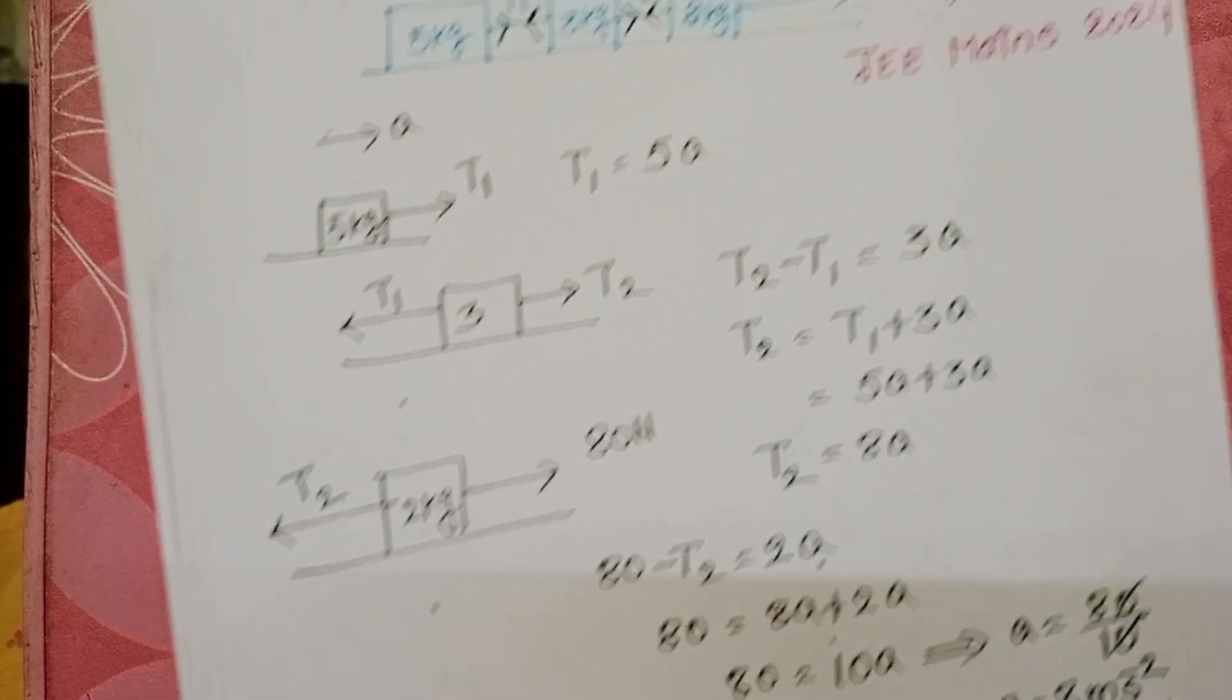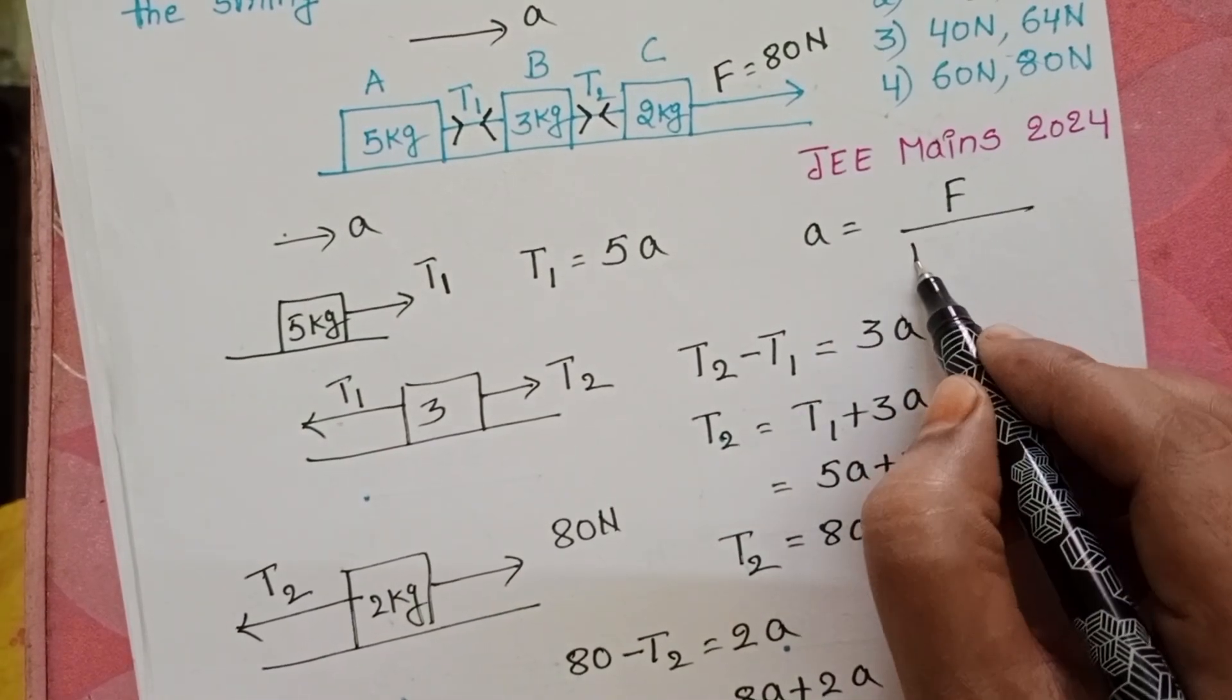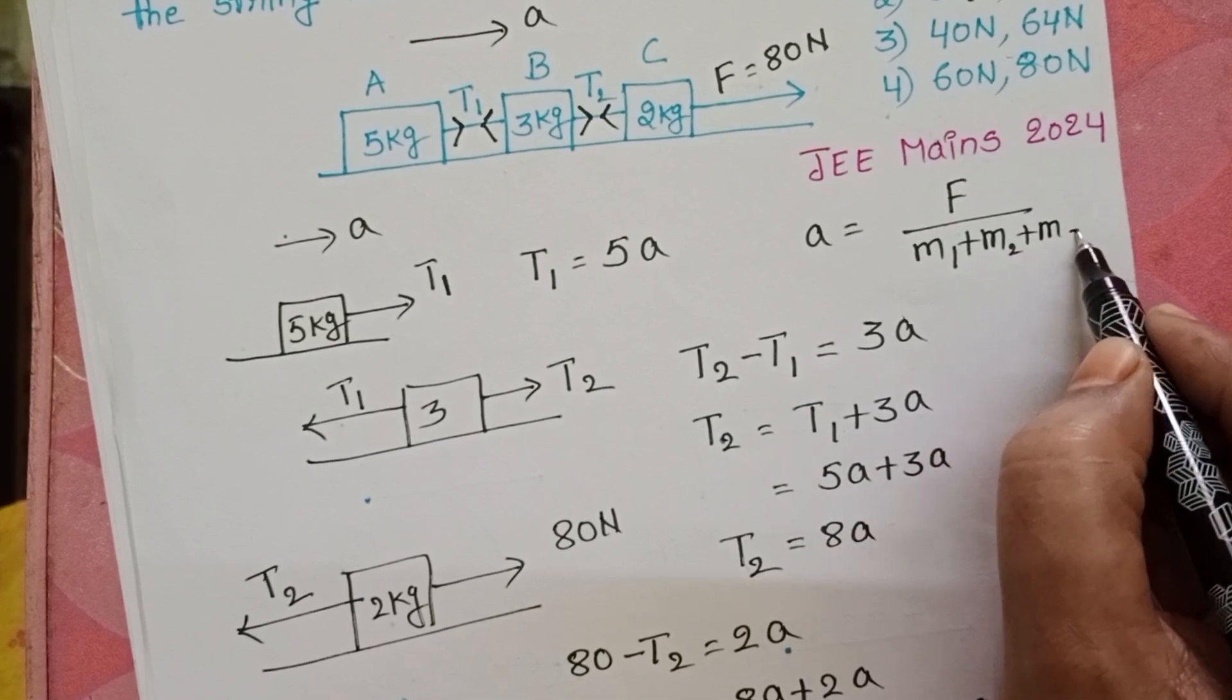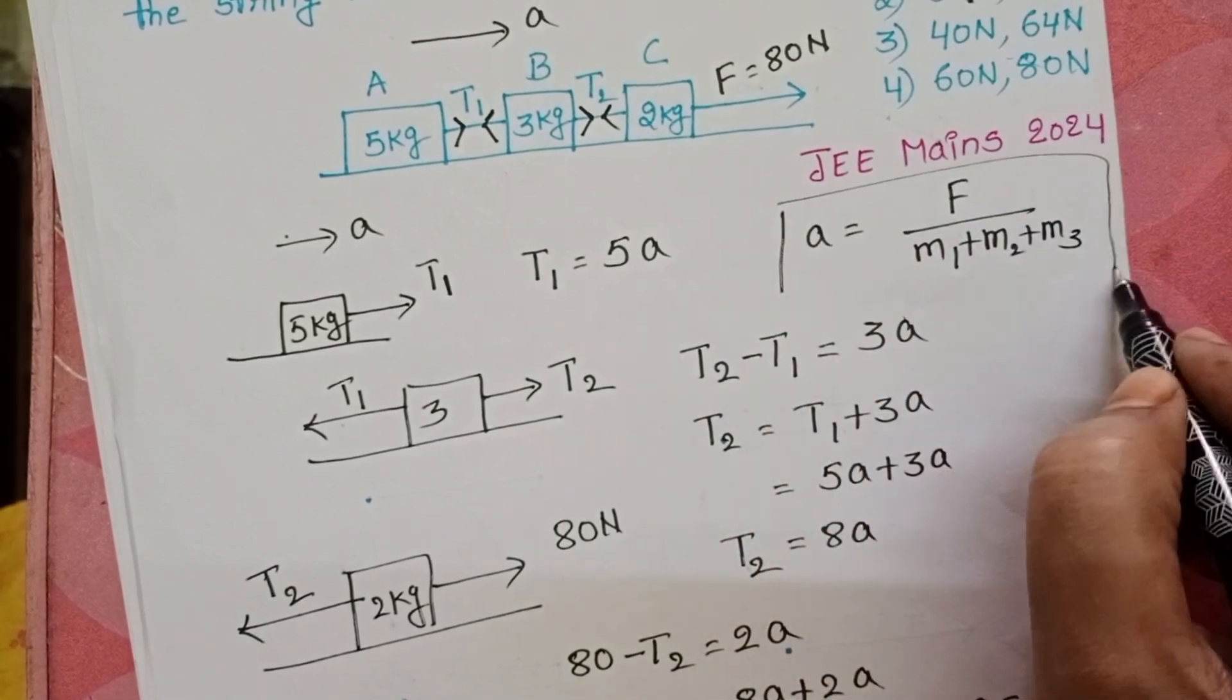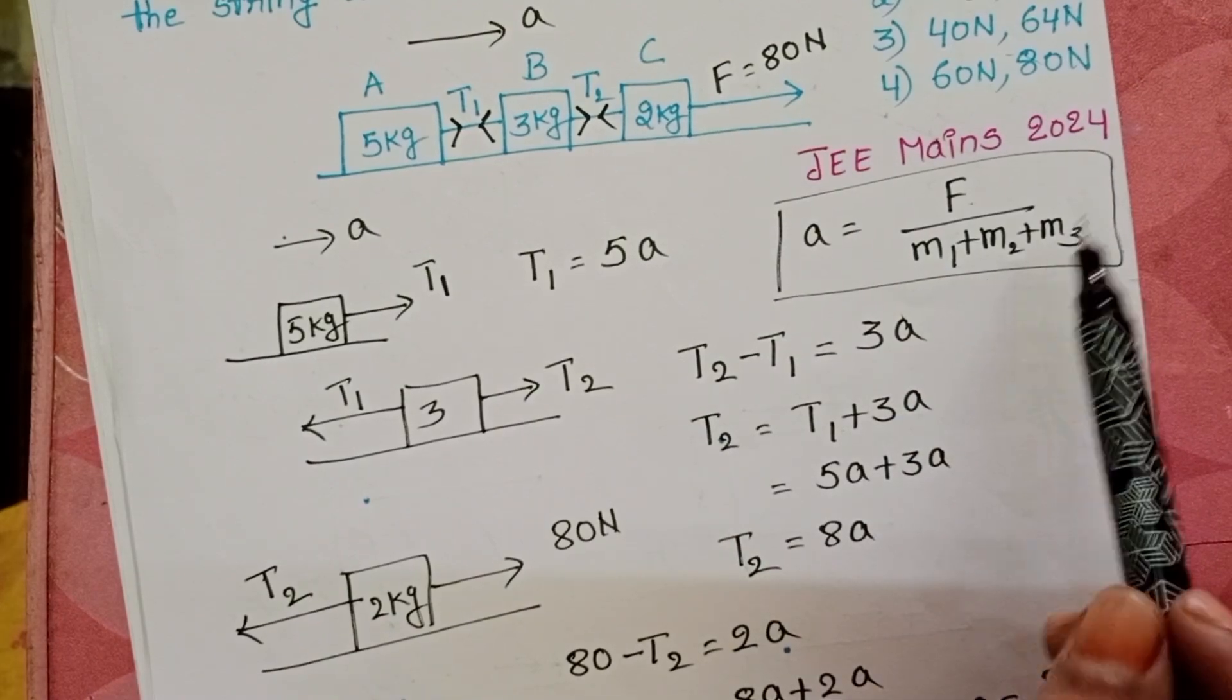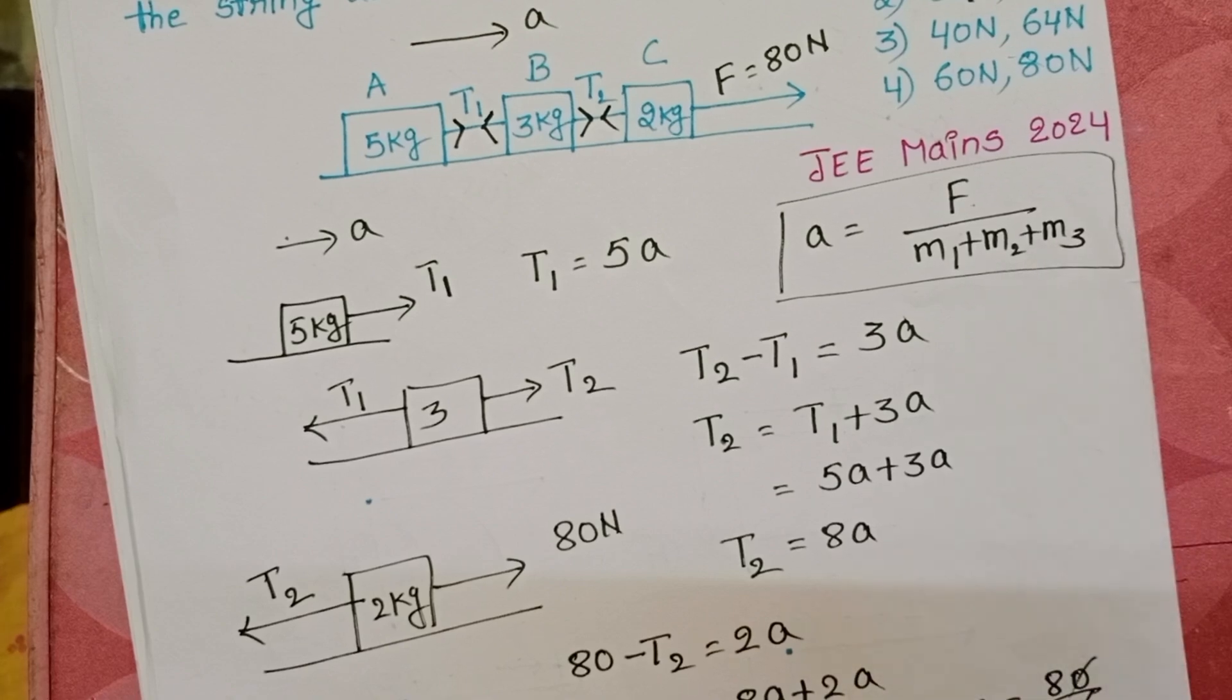When you know the formula directly, acceleration equals force by sum of the masses. This is the formula to calculate the acceleration. Remember this formula. Here applied force is 80 newton, sum of the masses is 10 kg, so 80 by 10 equals 8 meter per second square.